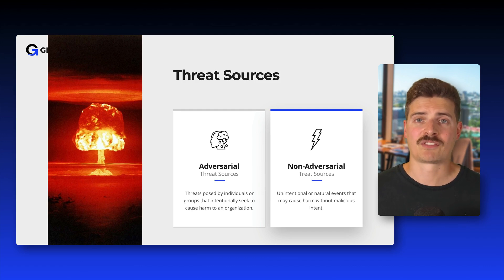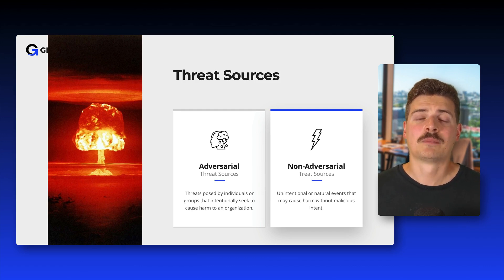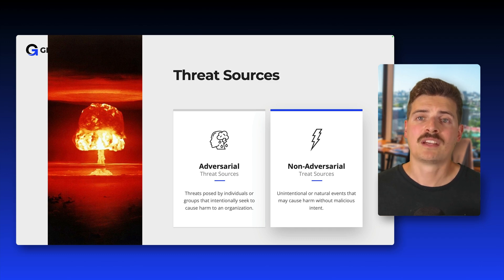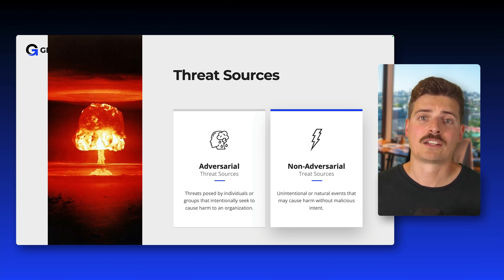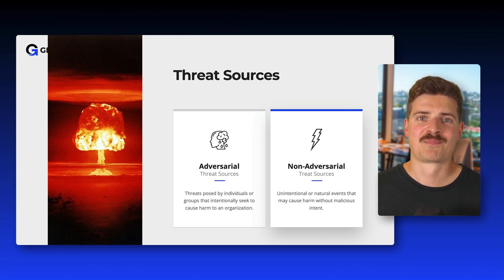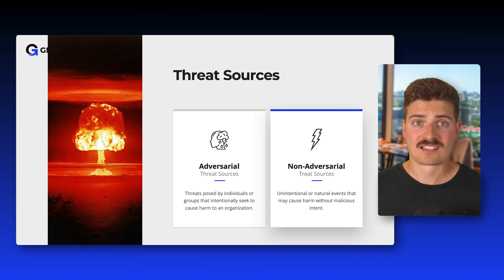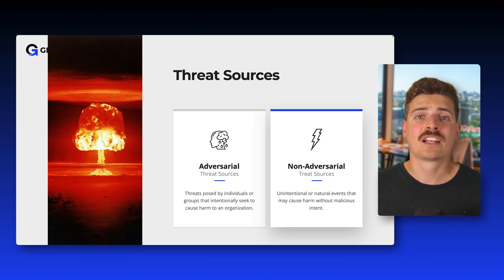On the other side, we have non-adversarial threats. These aren't intentional, but they can still be just as damaging. Think of human error, like an employee sending a file to the wrong person, or technical failures, software bugs, and even natural disasters like floods or fires. Even though these threats aren't malicious, they can still exploit weaknesses in your systems and cause significant harm like data loss, service disruption, or legal consequences.